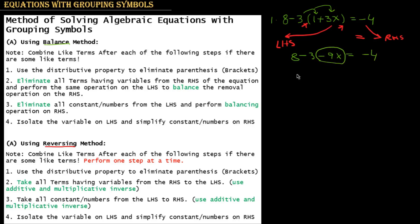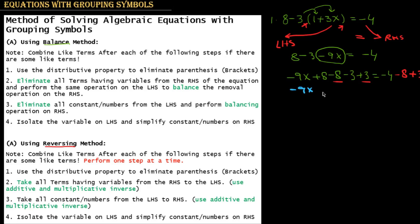We keep minus 9X on the left hand side. To remove the 8, since it is plus 8, we add minus 8 using the balance method. We also have minus 3, so we add plus 3. We perform both operations on the right hand side to balance the equation: minus 4 minus 8 plus 3.